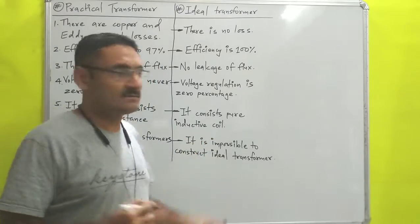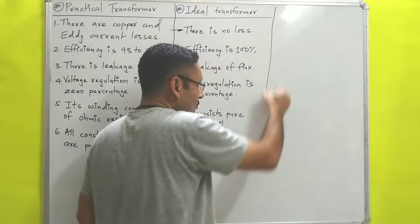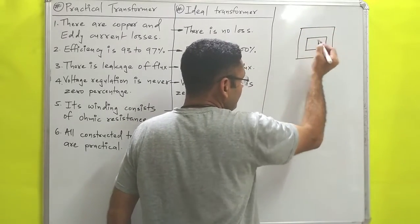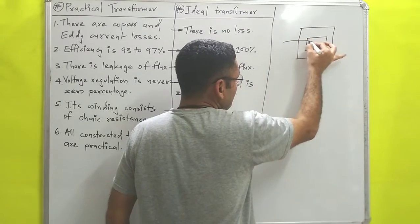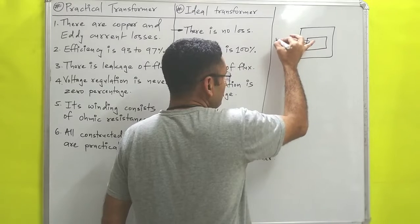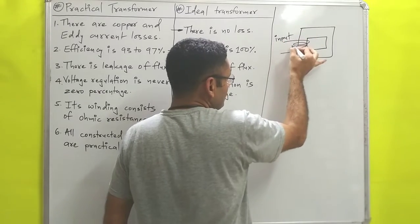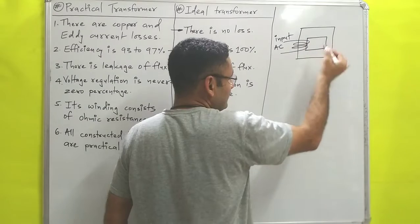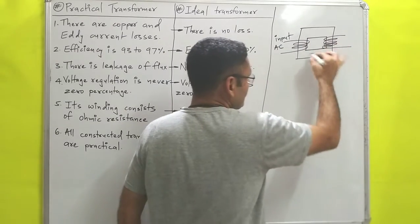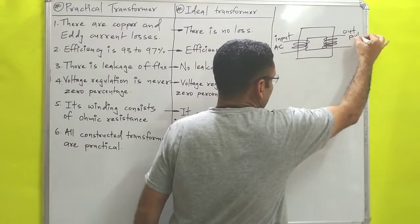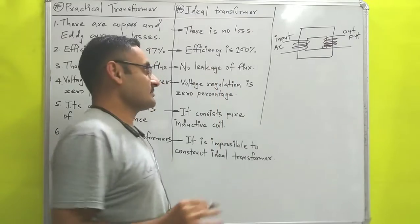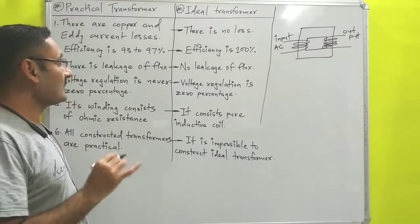Before understanding the differences, first we will understand the simple construction of a transformer. We know very well that a transformer has one core made with soft iron, one primary winding to which you supply AC input voltage, and a secondary winding from which, with the help of mutual induction, we get voltage output.